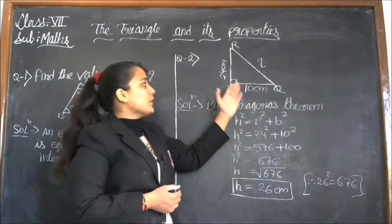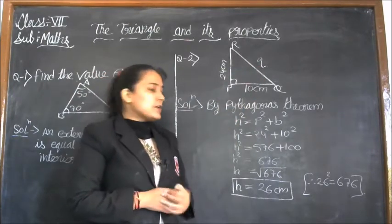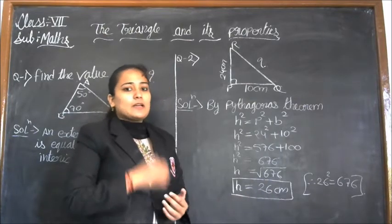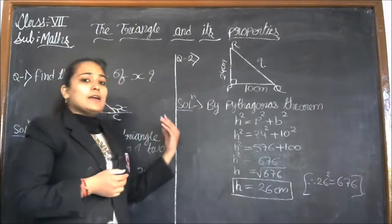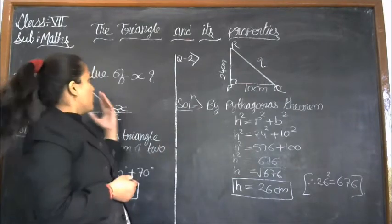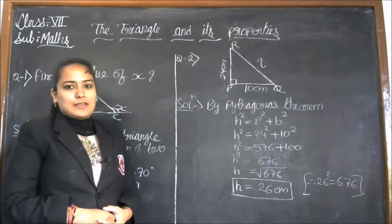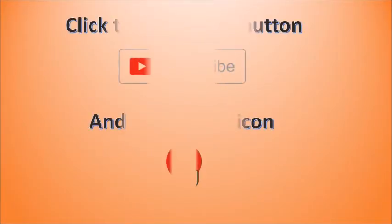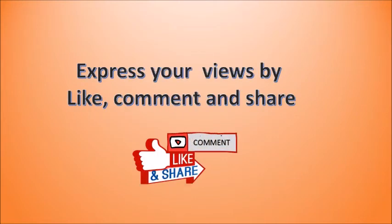So students, in this equation perpendicular and base are given and we found the hypotenuse is 26 centimeters. Through these methods we can find the hypotenuse, perpendicular, base, or an exterior angle. Thank you and have a nice day.